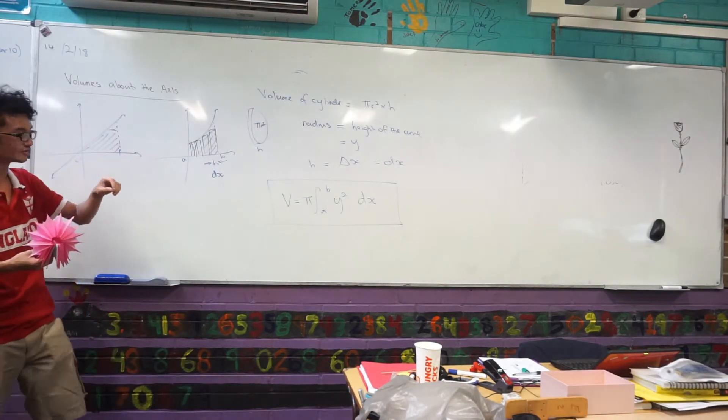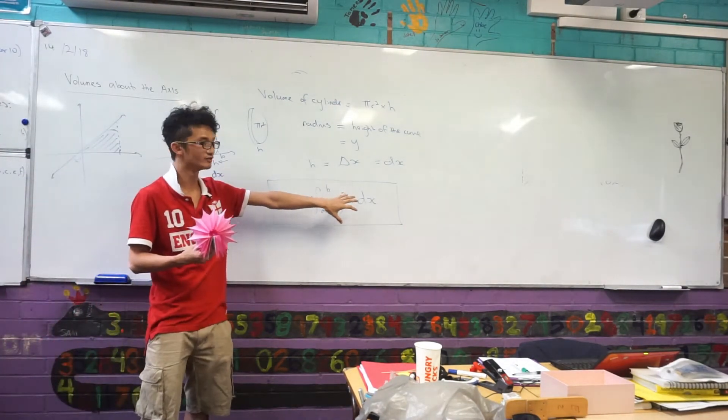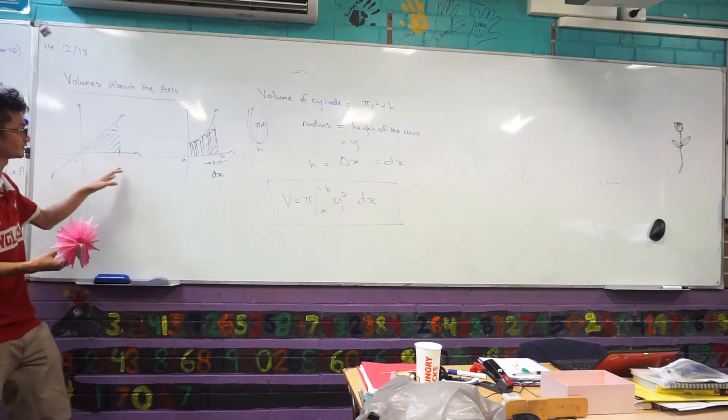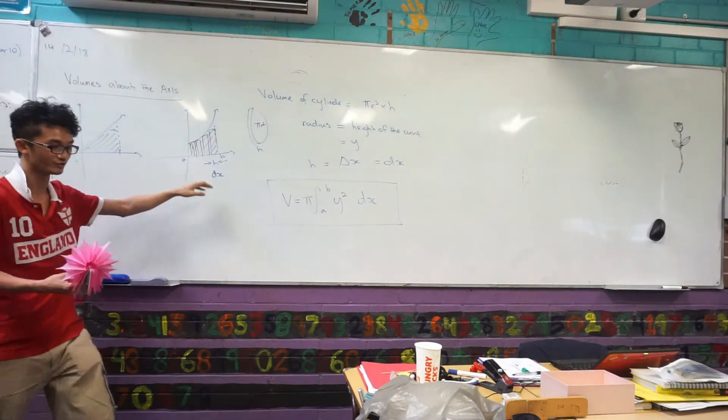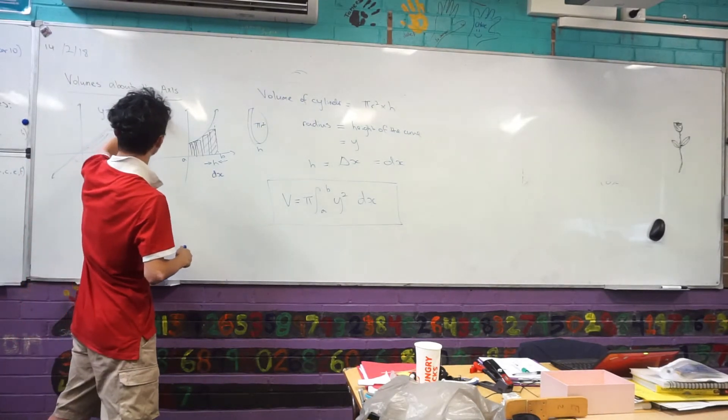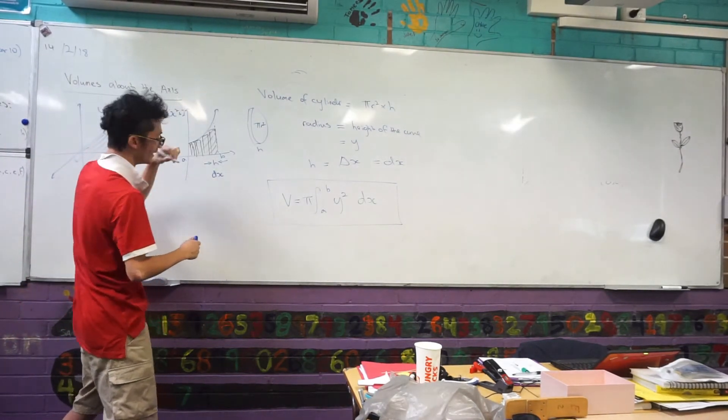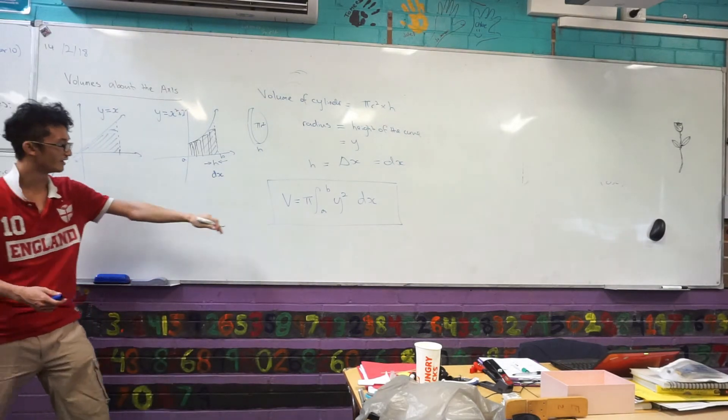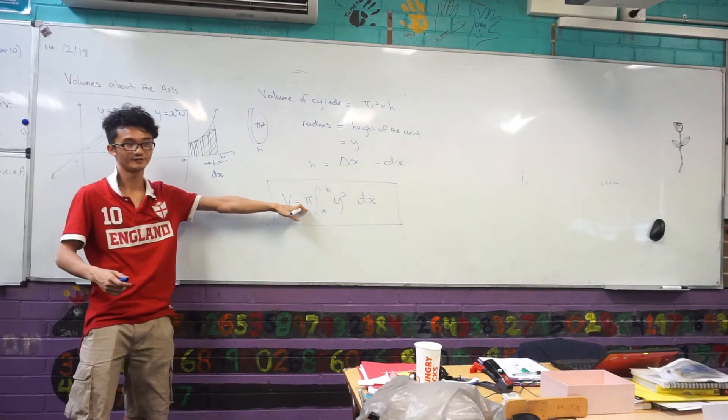What that actually means is, whatever equation that I'm giving you, so for example this would be like y equals x, or this is like y equals x squared plus 2. All you have to do is square the equation I've given you, and then integrate it from a to b, and then multiply by pi. Can we copy that down there? Yep, I'll give you some time for that.